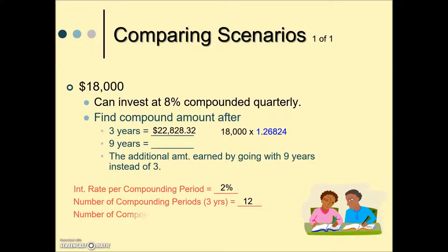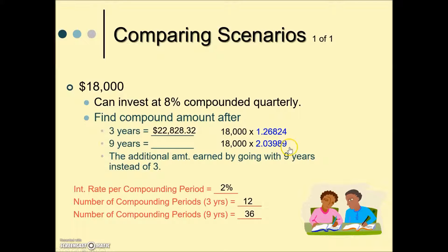What about 9 years? Our interest rate per compounding period doesn't change — it's still 8% compounded quarterly, so i is still 2% — but our number of compounding periods has changed. Now we're dealing with 9 years times 4 times per year, giving us 36 compounding periods. We look up 2% for i and 36 for n on the table, which gives a multiplier of approximately 2.0 and so on. Multiplying by the initial $18,000 investment results in a balance of nearly $37,000.